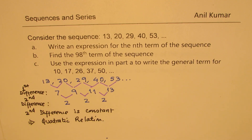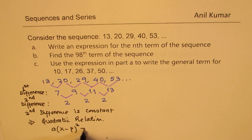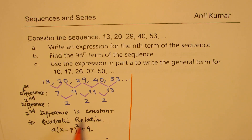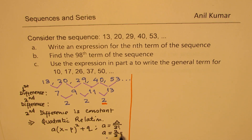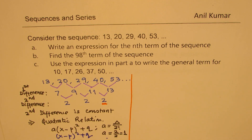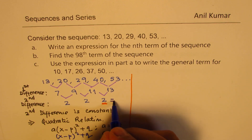Since it's a quadratic relation, we can write this as a times (x minus p) squared plus q. There's an important formula: the value of a equals the constant second difference divided by 2 factorial, which is 2. So in this case, a equals 2 divided by 2, which equals 1. Therefore our relation is (x minus p) squared plus q, with a equal to 1.